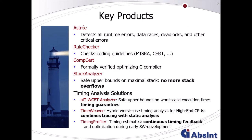Here's an overview about the Absint key products. Let's start with the source code level analyzers, Astrae and Rule Checker. Astrae detects all runtime errors like division by zero, array out of bounds accesses, arithmetic overflows, but also data races and deadlock problems. Rule Checker is a tool that checks coding guidelines like MISRA, CERT or CWE.